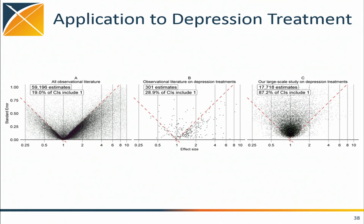This is the observational literature on depression treatments — only 19% of confidence intervals contain one, and for our specific depression treatments just 29% include one. You can see the clustering just under the line — the p-hacking we're familiar with. For the actual 17,718 studies we're doing here, 87% of confidence intervals include one. The stuff that's statistically significant using this calibrated method certainly warrants further investigation. If you wanted to study whether sertraline causes GI bleeding, you'd want to look at it in the context of all drugs for depression and all outcomes. There's an app allowing you to play with these visualizations — you can drill down on different drugs and different outcomes.